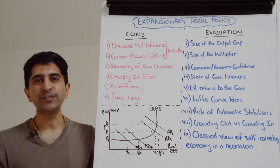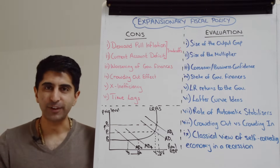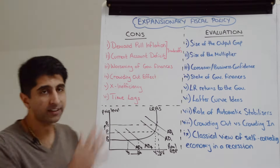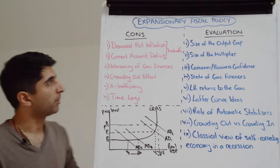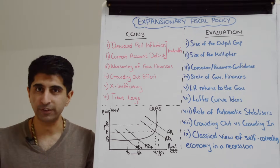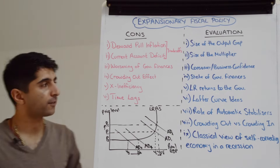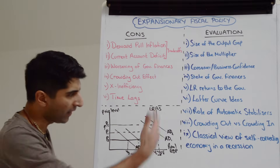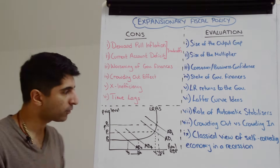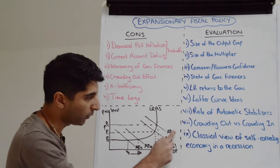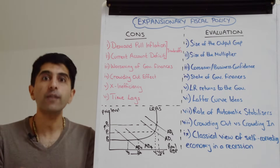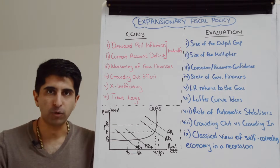Having understood the merits of expansionary fiscal policy, let's look at the other side of the coin — starting with the problems. A couple of the major issues are macro objective trade-offs that come with using expansionary fiscal policy. If these policies are successful, aggregate demand will increase in the economy, say from AD1 to AD2, with higher economic growth and lower unemployment.